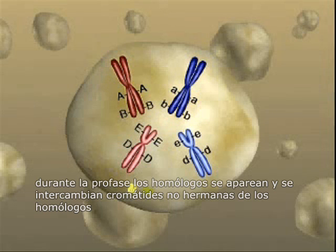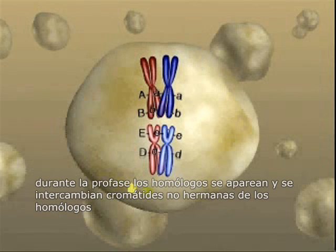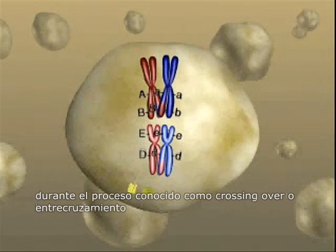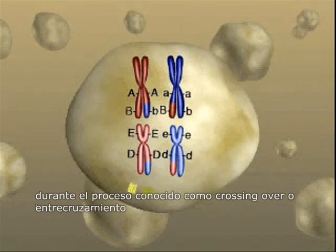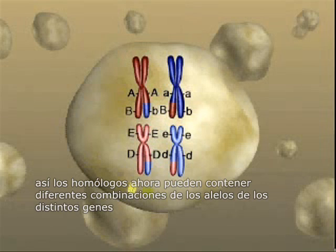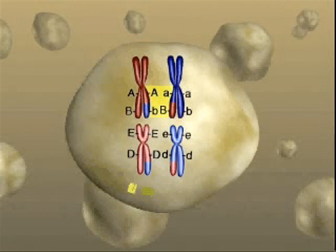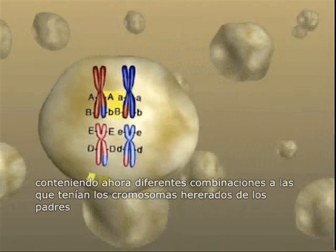During prophase of meiosis, homologous chromosomes pair and non-sister chromatids exchange sections of DNA through the process known as crossing over, or recombination. The resulting chromosomes may now contain different combinations of alleles than were found in the chromosomes inherited from the parents.